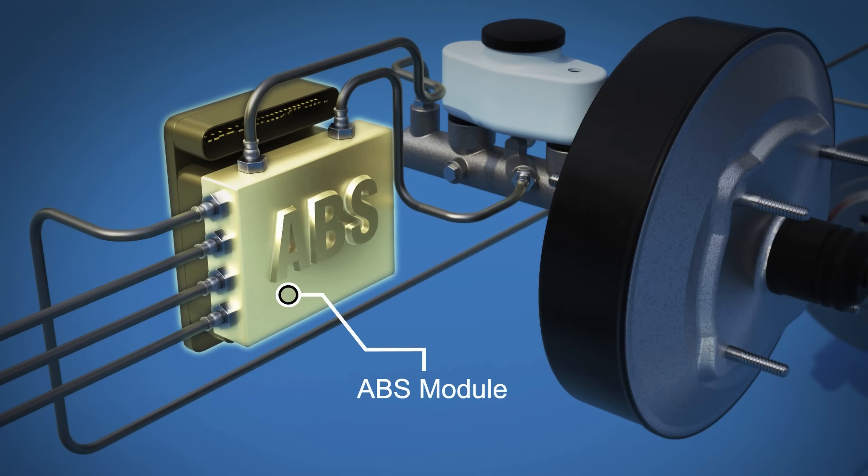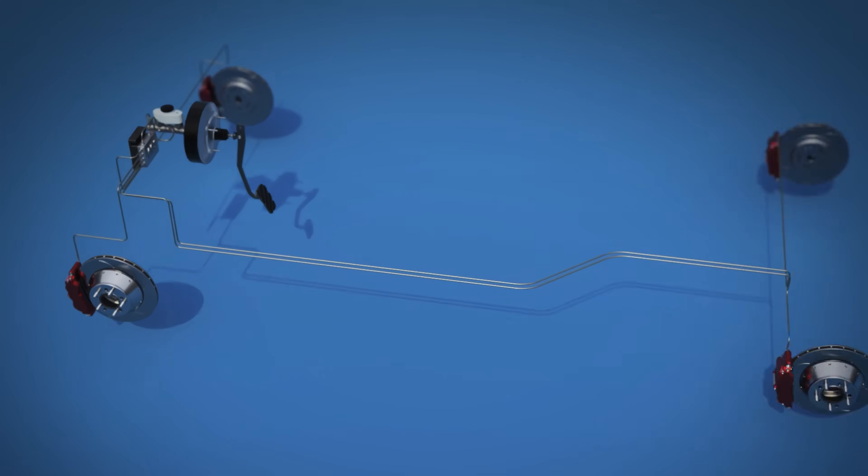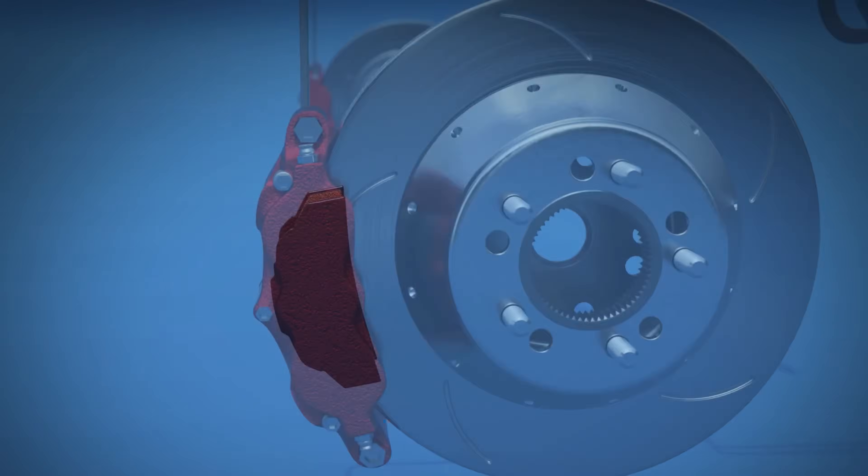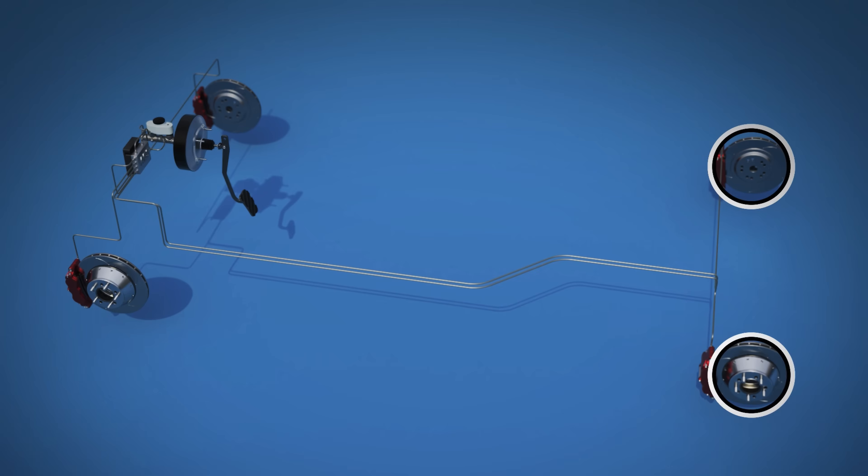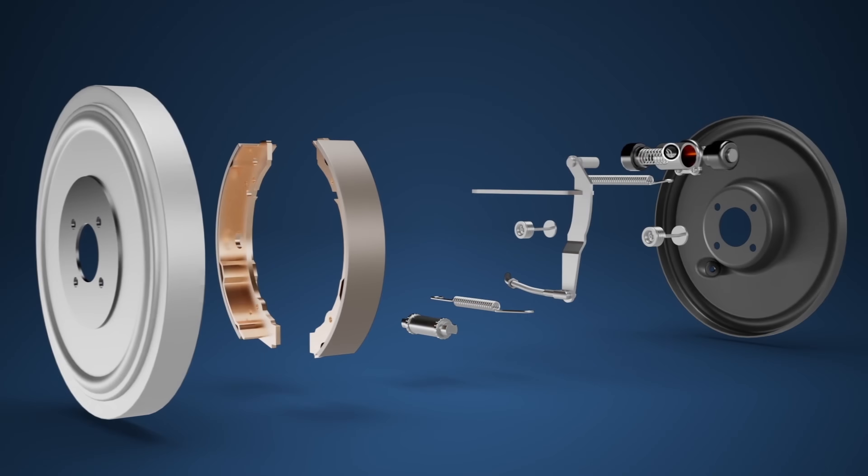the ABS module, brake hardlines and hoses, brake calipers, disc brake pads and disc brake rotors. If the vehicle is fitted with drum brakes, this also includes wheel cylinders, brake drums and brake shoes.